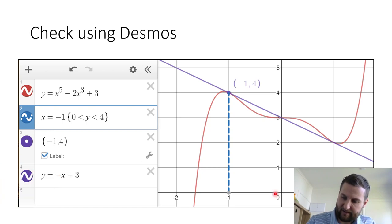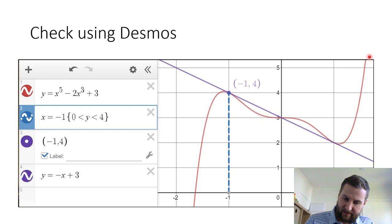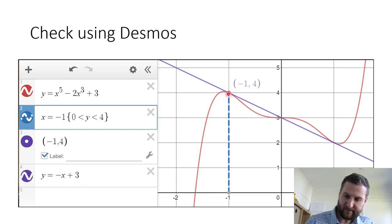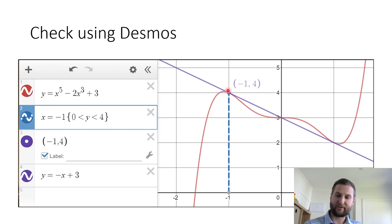We can have a look here using Desmos. I've graphed the original fifth-degree function in red, and then my point of interest minus 1 comma 4. I've graphed my tangent line y equals minus x plus 3, and it looks tangent at that point. Due to symmetry, it also looks tangent at the point 1 comma 2.